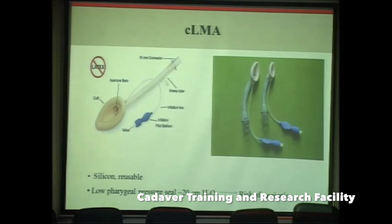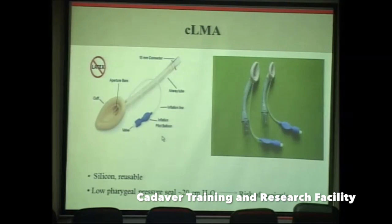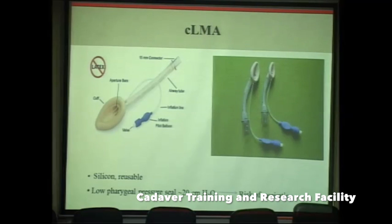The classic LMA is the benchmark for all laryngeal mask airways. Its different parts include the inflatable cuff, aperture bars, airway tube, a standard 15 mm connector, inflation line, inflation pilot balloon, and a metallic valve. It is made up of silicone and is reusable — the manufacturer recommends around 40 uses, but it is said it can be used over 100 times if properly autoclaved and maintained.